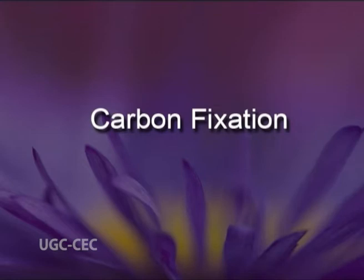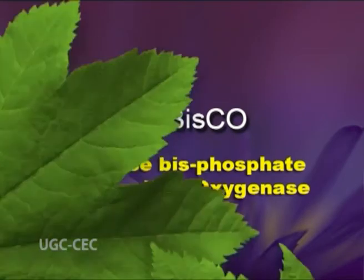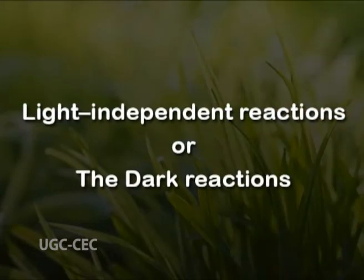The key enzyme of the cycle is called rubisco, or ribulose bisphosphate carboxylase oxygenase. This process does not need light to occur and hence is sometimes called the dark reactions or the light-independent reactions.